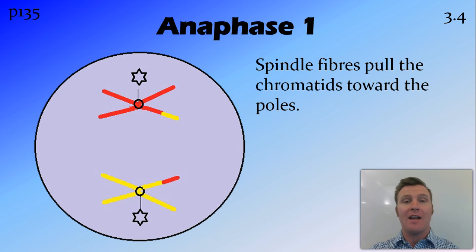We then have anaphase 1, where those spindle fibres pull those chromosomes apart in their pairs to the poles of the cell.